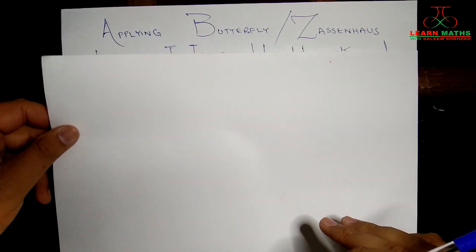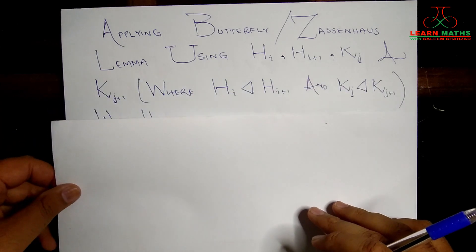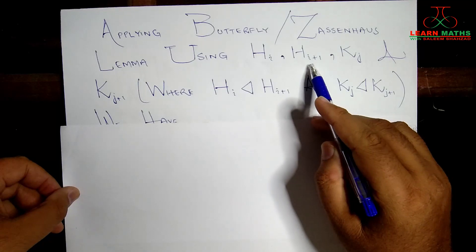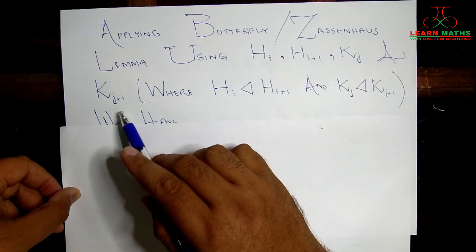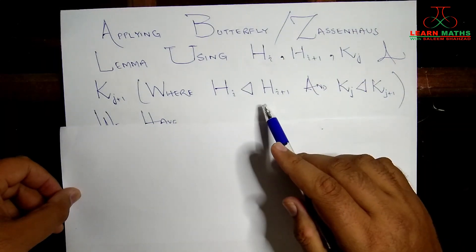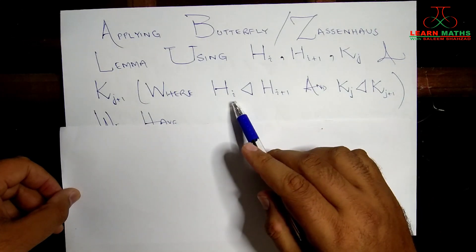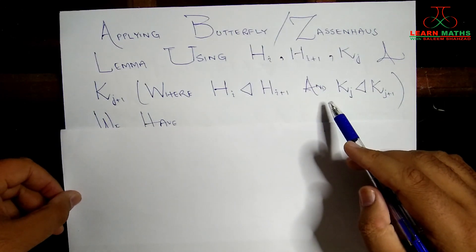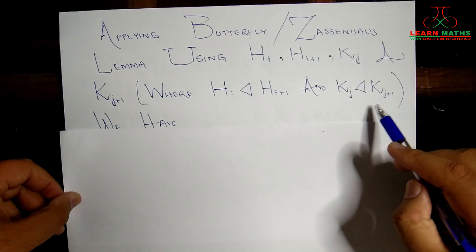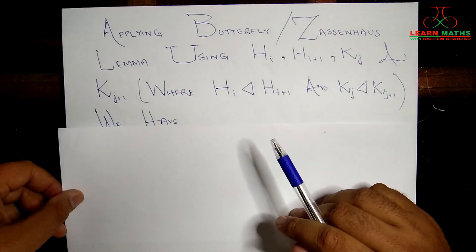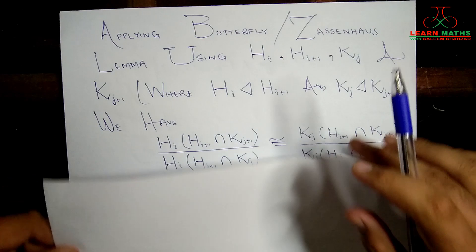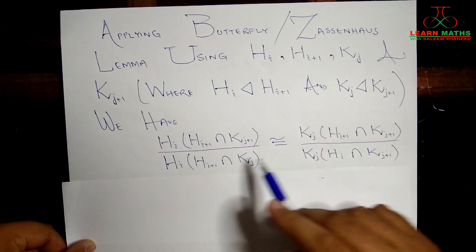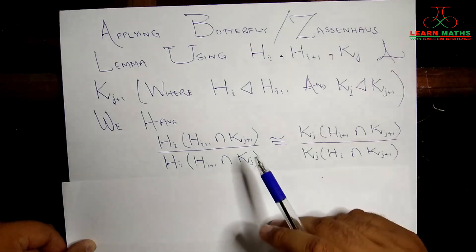We apply the Butterfly Lemma on four subgroups of G: H_i, H_{i+1}, K_j, and K_{j+1}. From the original two series we already know that H_i is a normal subgroup of H_{i+1}, and K_j is a normal subgroup of K_{j+1}. Using the Butterfly Lemma on these four subgroups, we get that two specific quotient groups are isomorphic to each other.